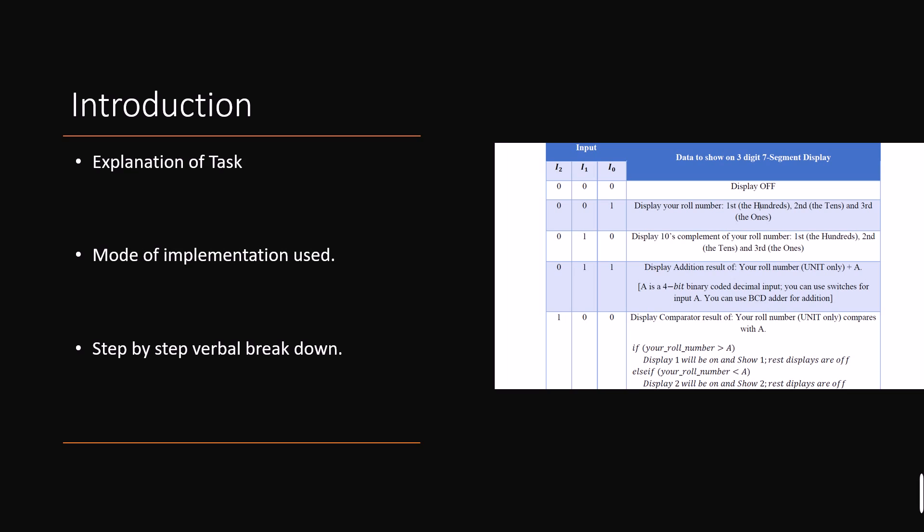At the start I will explain my task. For all 0 inputs the display is off. When I get 001 I have to display my roll number which is 095 and at 010 I have to display the tenth complement of my roll number. At 011 I have to display the addition result of my roll number unit digit with a number A. And at the end I have to display the comparator result of my roll number unit digit with a number A.